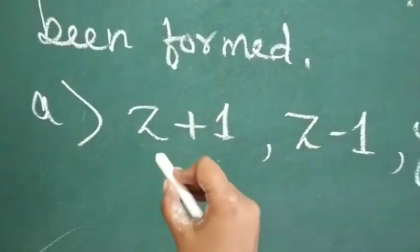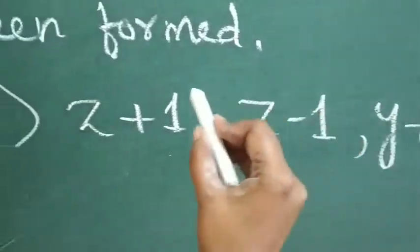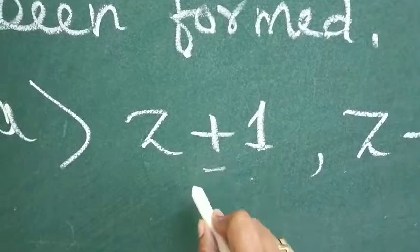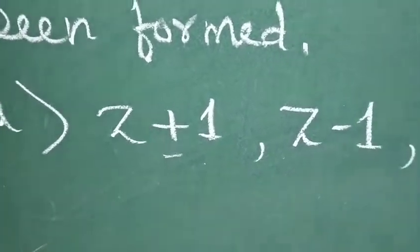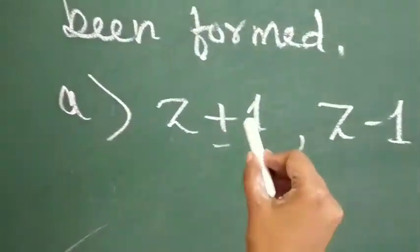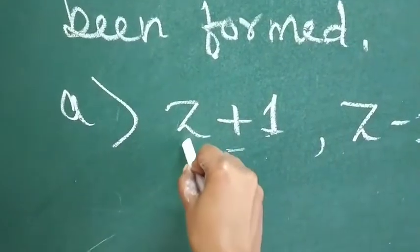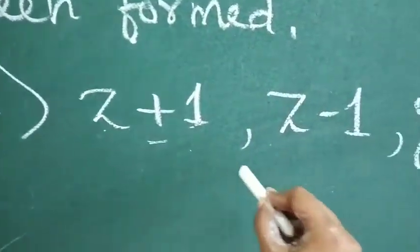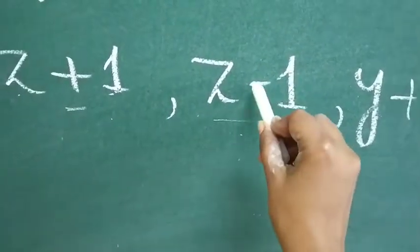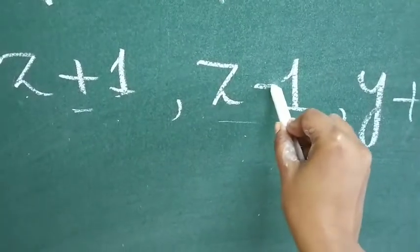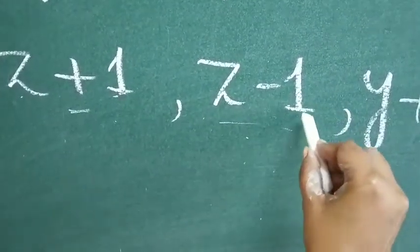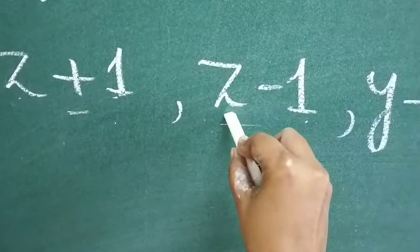In the first one, these all are expressions. So, in the first one, which operation is used is addition. So, we will write addition and how it is formed. Here, 1 is added to z. Now, in the next one, which operation is used is minus. So, we will write subtraction.